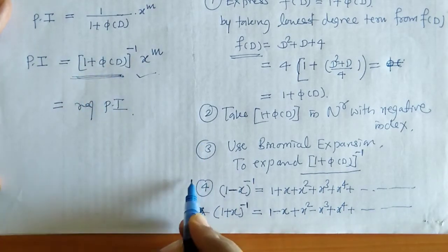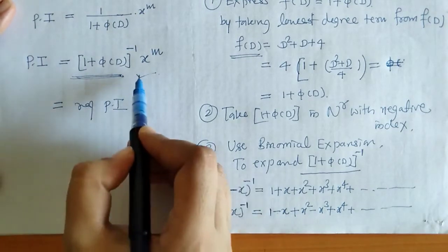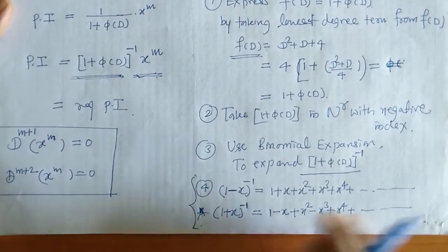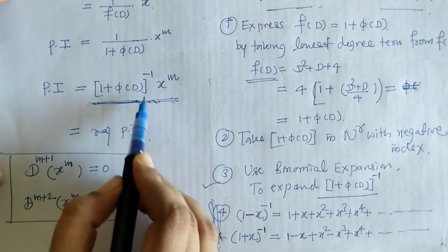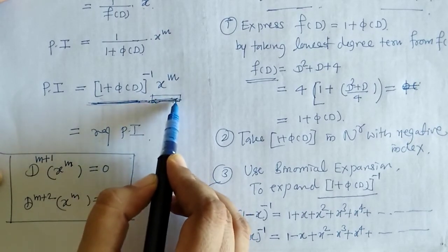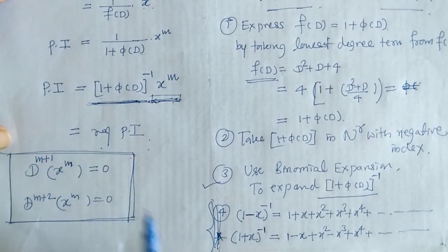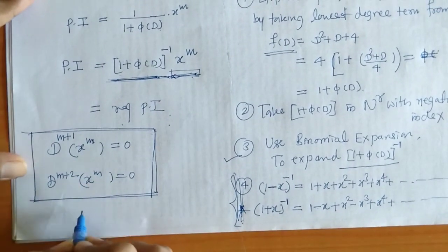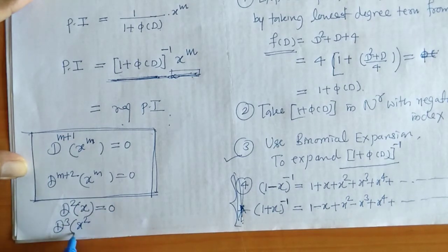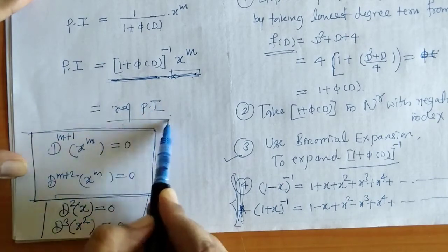We expand using this binomial expansion, then operate on x raised to m. The key result is that derivatives of x raised to m of order higher than m are zero. For example, the double derivative of x is 0, and the third derivative of x squared is 0. Using this result, we will get the required PI.